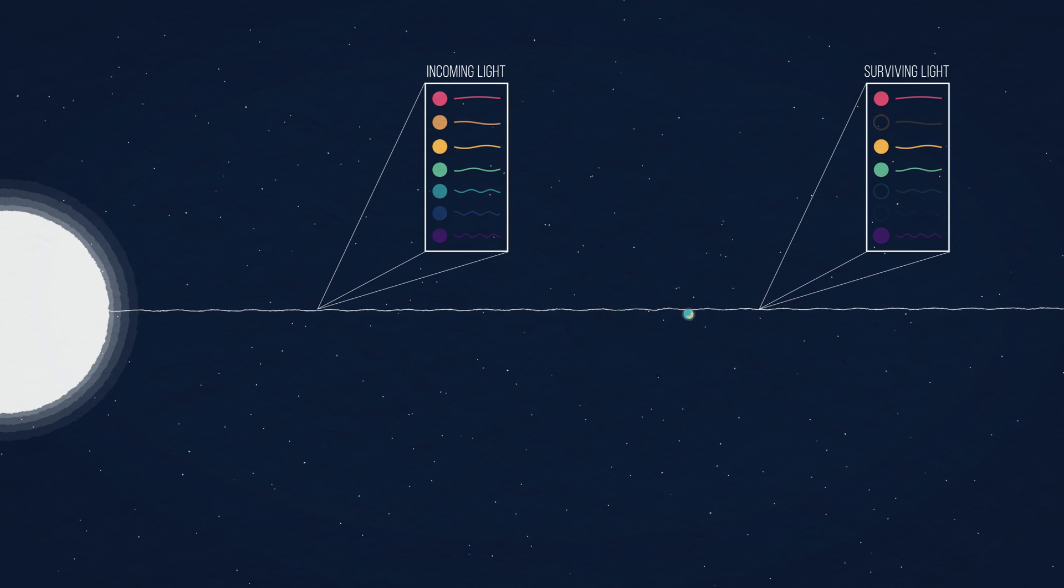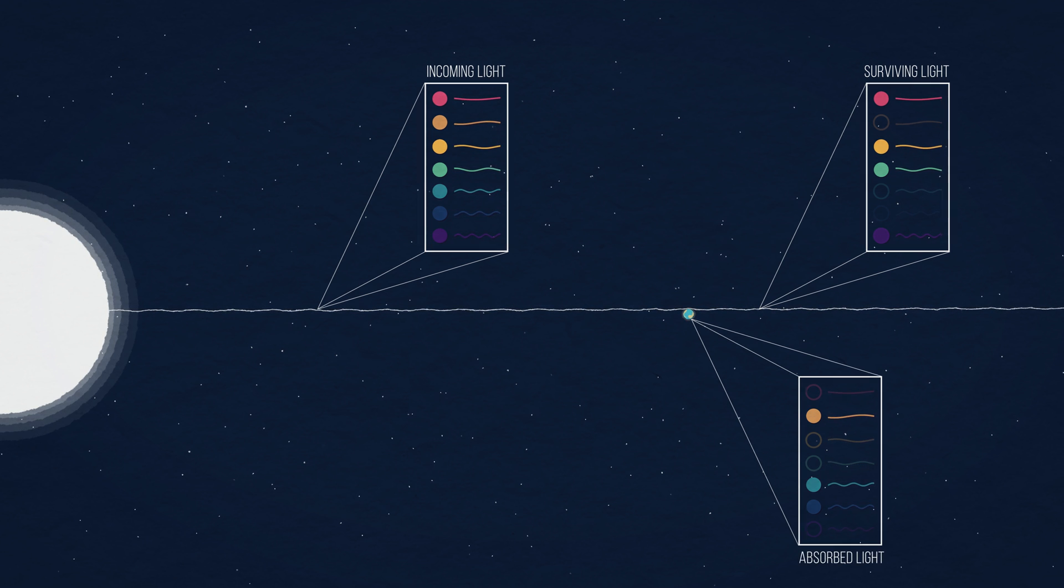Now back to the transiting planet. As light is traveling through the planet's atmosphere, some wavelengths get absorbed. Which wavelengths get absorbed depends on which molecules are in the planet's atmosphere.